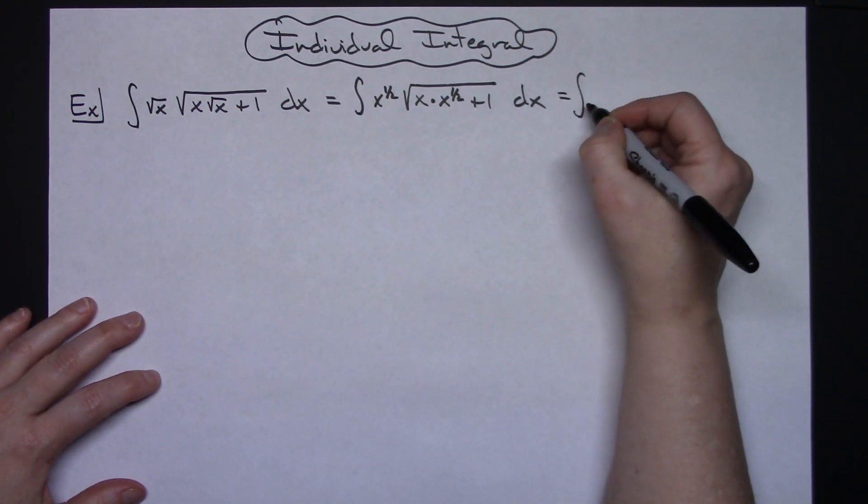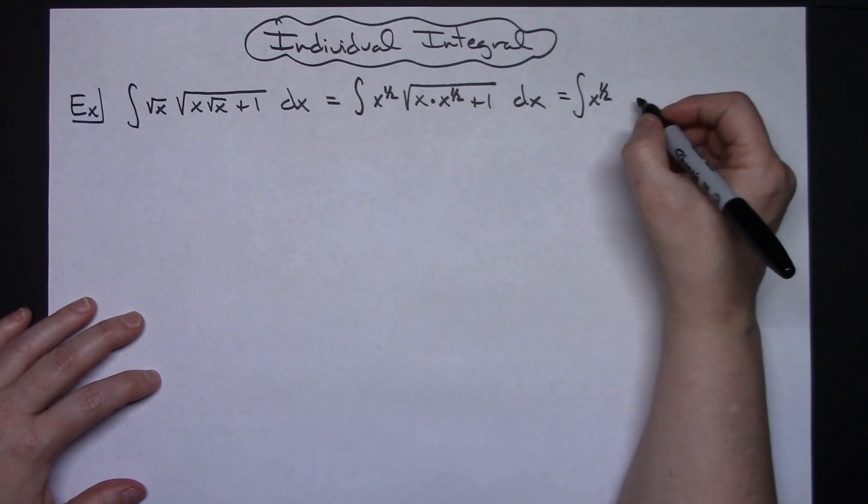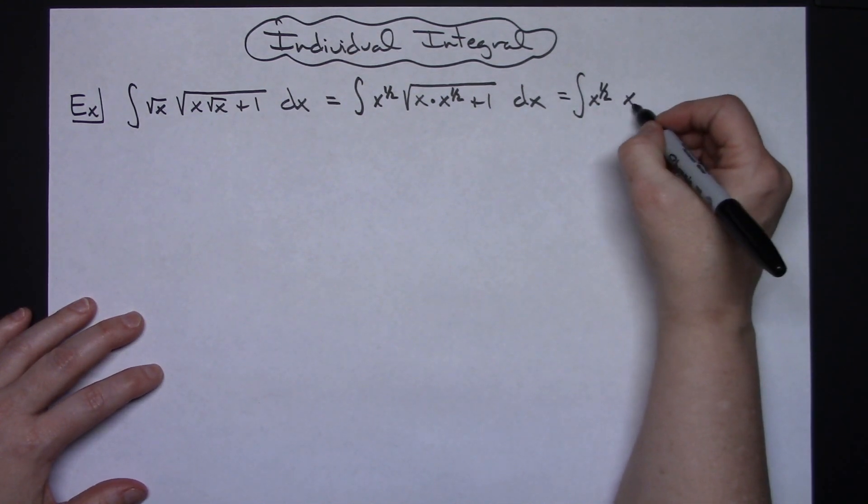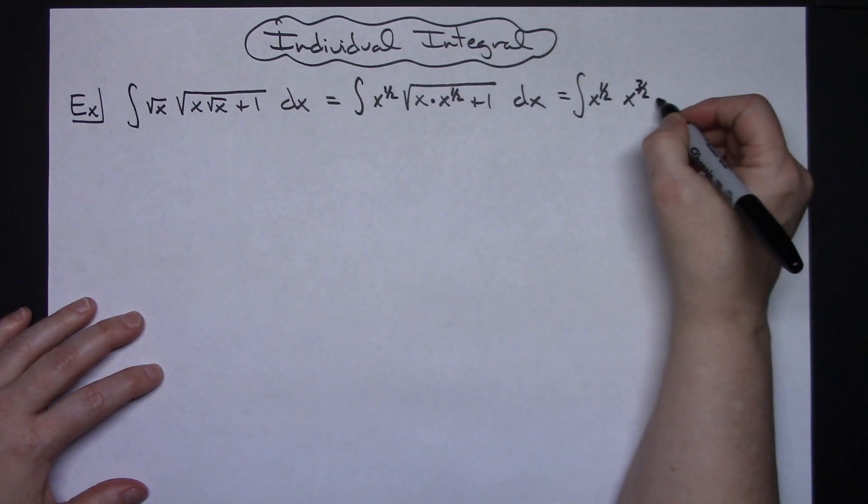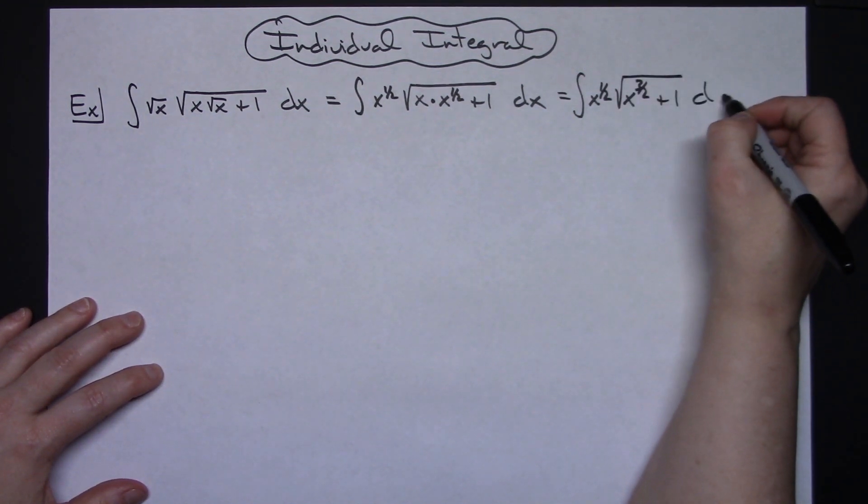I'm going to have the integral of an x to the 1 half and then x to the 3 halves plus 1 all under that radical and then dx.